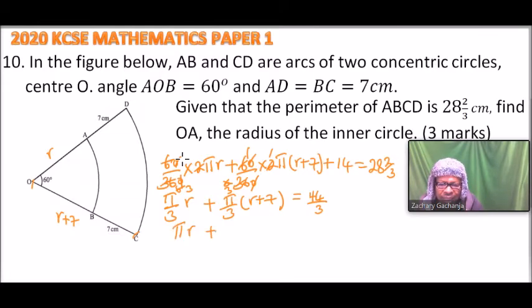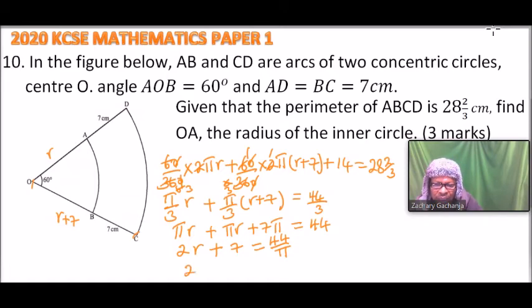We can now divide by π throughout. This gives us 2r plus 7 equals 44 divided by π. Then subtract 7 from both sides, so we have 2r equals 44 divided by π minus 7.